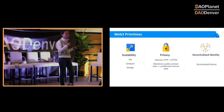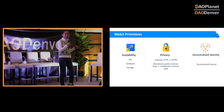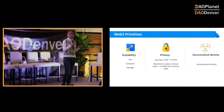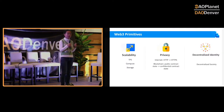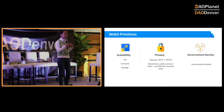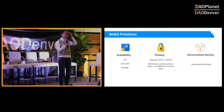You cannot build a real Web3 without being scalable, because users are used to everything being rendered so fast. If things are not as fast as we expect, you're just not going to get users. The second requirement is privacy. A lot of people probably do not really think about privacy as something they should immediately consider when they build a dapp.